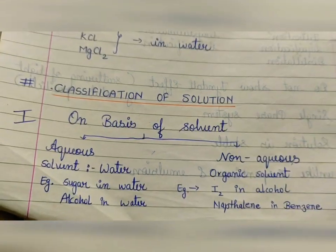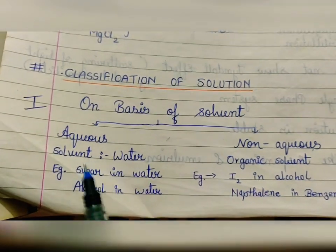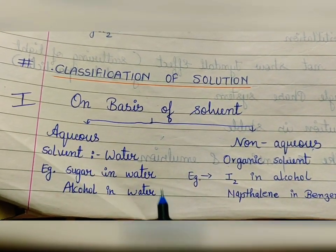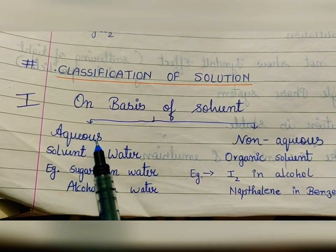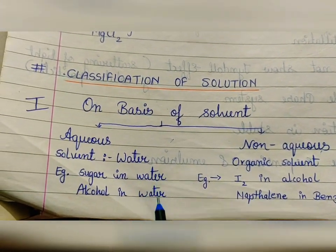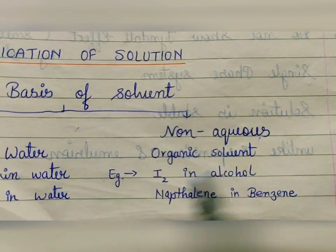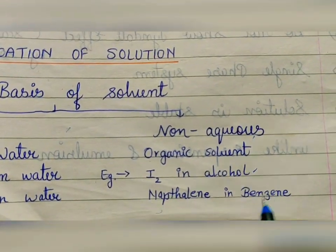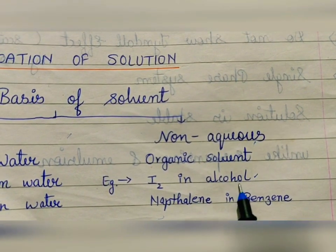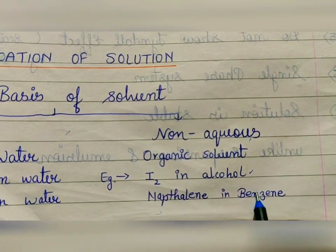Non-aqueous solutions generally comprise organic solvents. Examples of aqueous solution: sugar in water, alcohol in water. Examples of non-aqueous solution: iodine in alcohol, naphthalene in benzene — solutions having organic solvents.